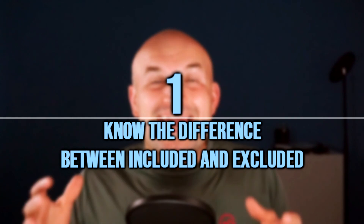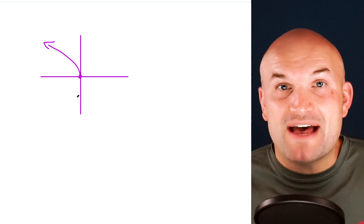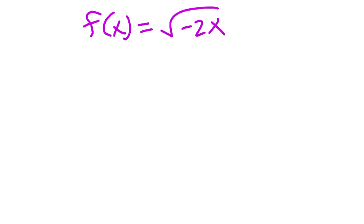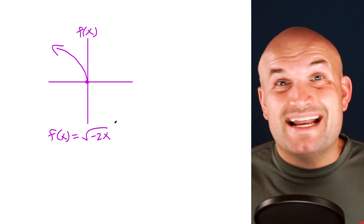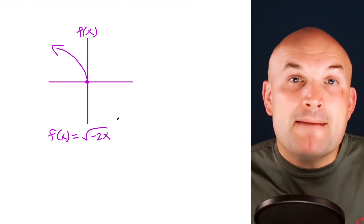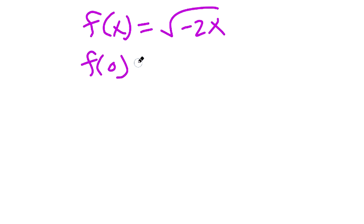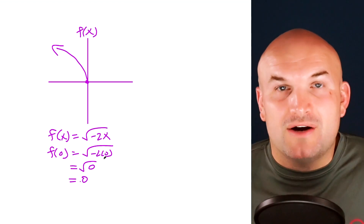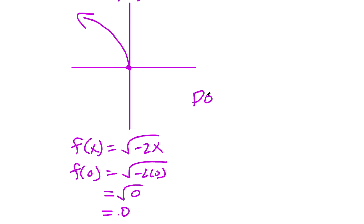You have to know the difference between included and excluded points. A value is within the domain when its x-value creates a point on the graph. For example, all negative x-values here are part of our domain, from negative infinity to zero, and there is a physical point at zero, so zero is in the domain. Algebraically, for f(x) = √(−2x), we evaluate by plugging in values. When I plug in zero, I get zero — a valid output — so zero is in the domain. For included values, we use a line in inequalities and brackets in interval notation.